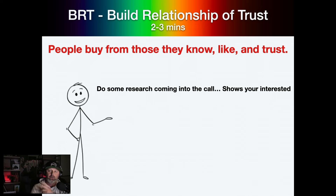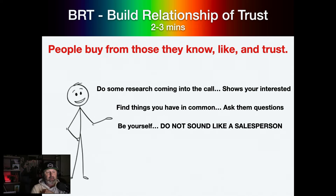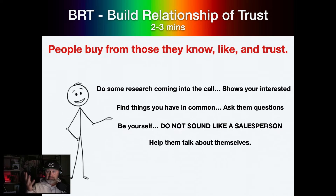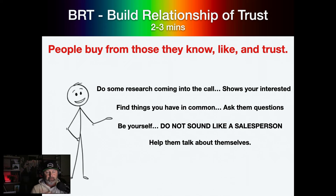Show that you're interested in them. Find things you have in common. Ask them questions. Don't sound like a salesperson — the best way to know is to listen back to your call. If you cringe because all you do is talk about yourself or what you're going to do for them, stop it. Help them talk about themselves. The book How to Win Friends and Influence People can be summed up simply: if you help people talk about themselves, they will like you. Two to three minutes — build a relationship of trust and make sure they know you're a confident, reliable, good person.